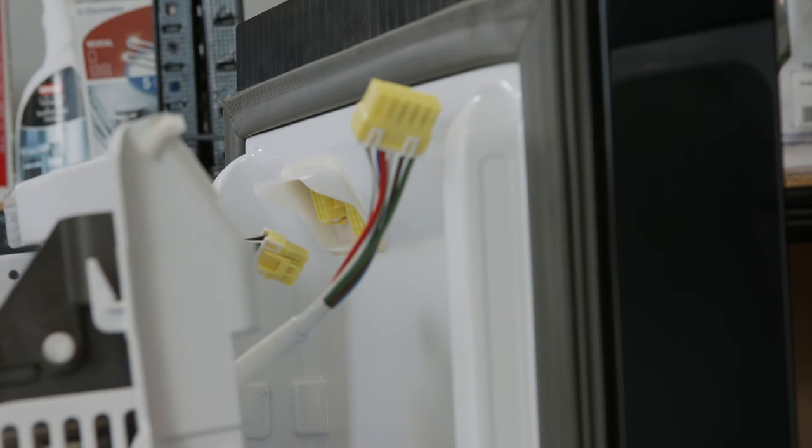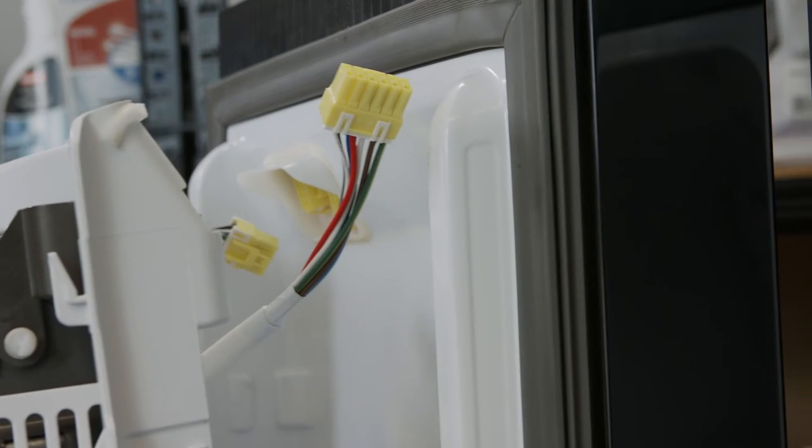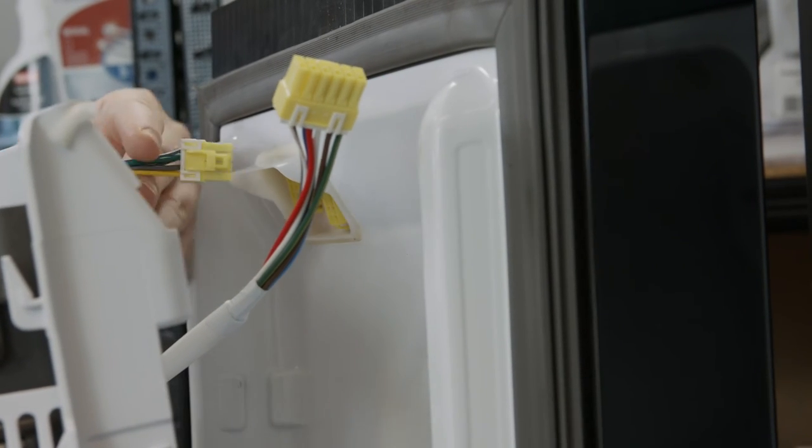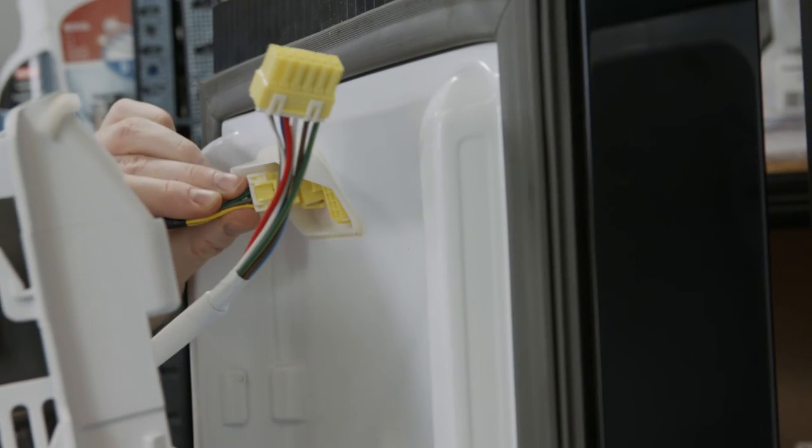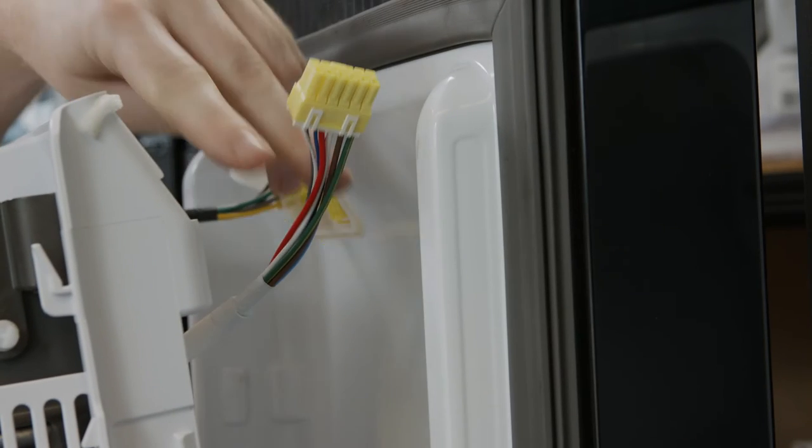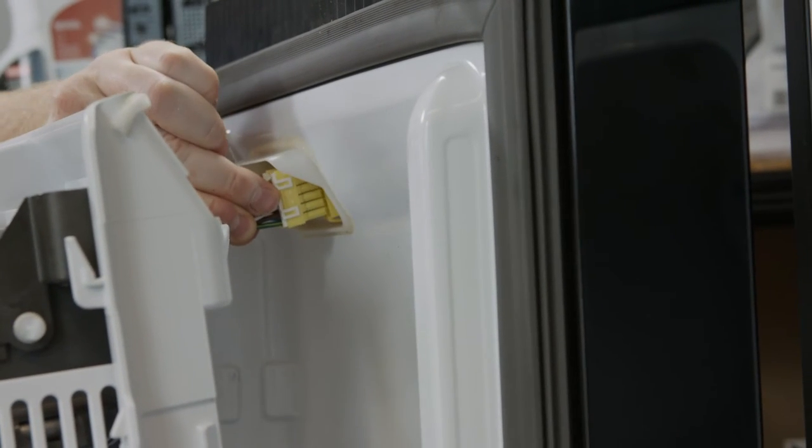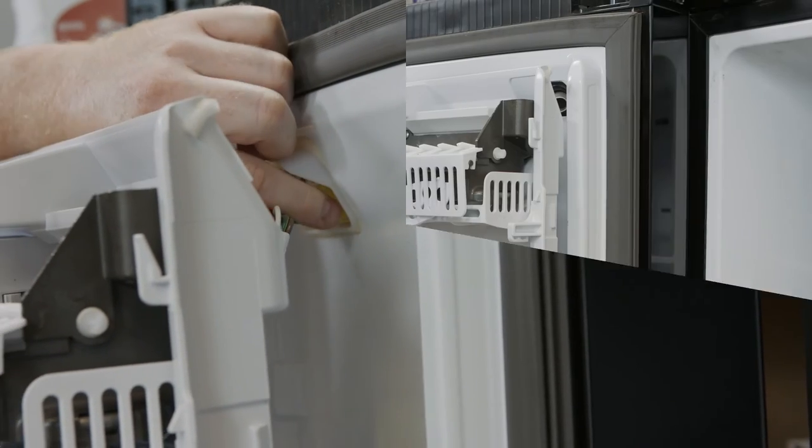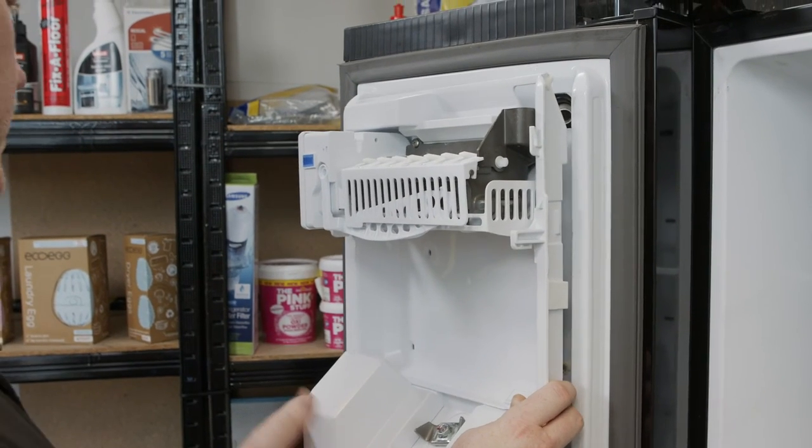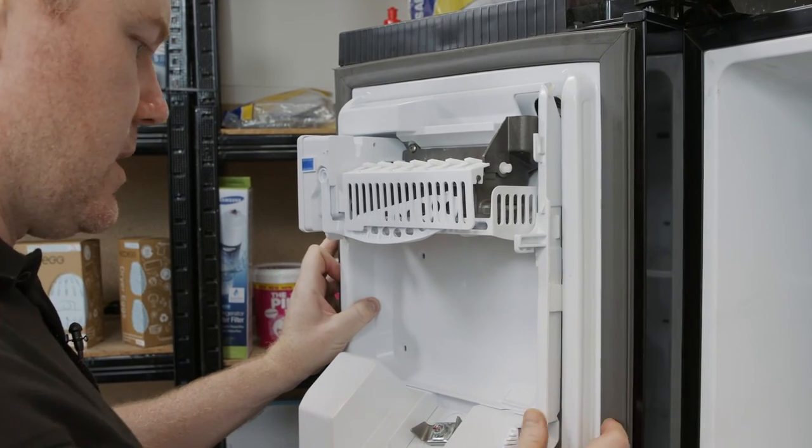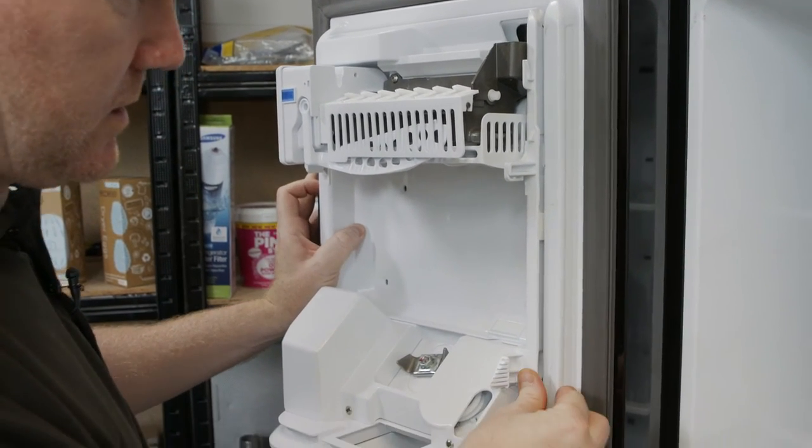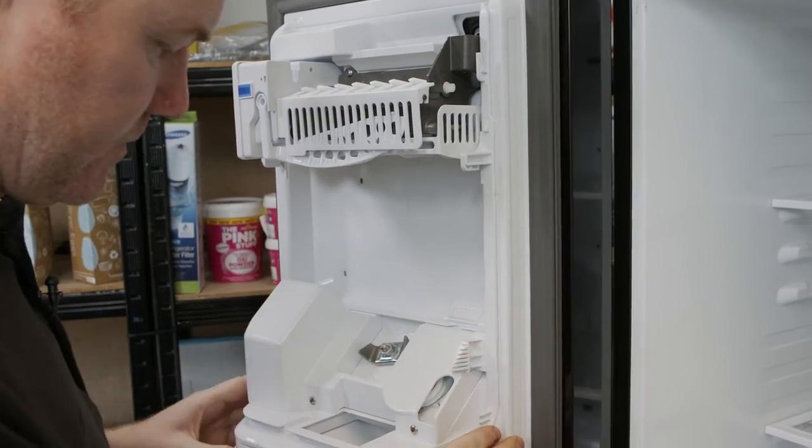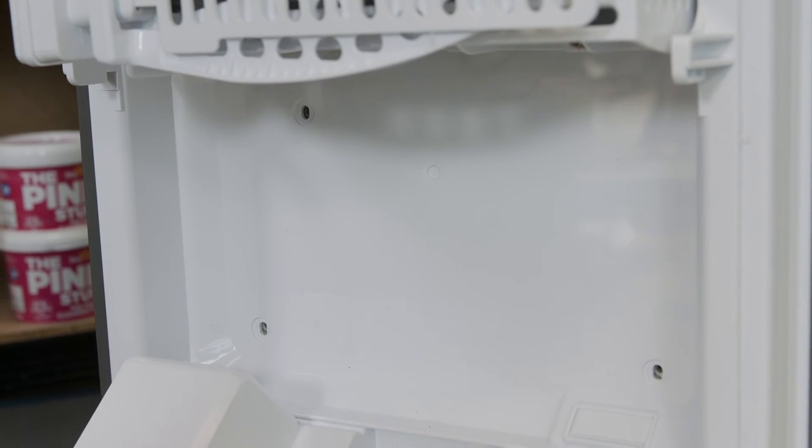Now it's time to refit the reassembled panel and new ice maker to the interior of the freezer door. Start by plugging the two plugs back into the freezer door sockets. Then refit the panel by hooking in the left side and then the right side until it clicks. Then refit the four screws.